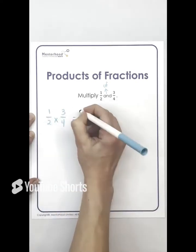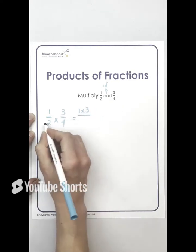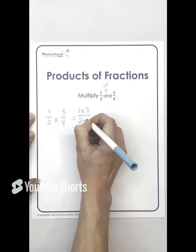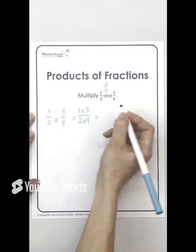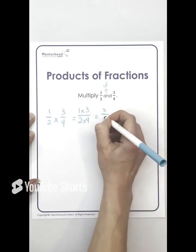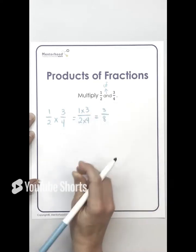So one times three, all you do is you multiply the tops together and you put them over the bottoms multiplied together. So that is super easy. One times three is three. Two times four is eight. So three eighths is your answer.